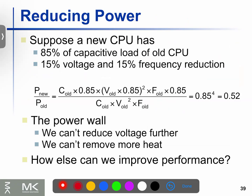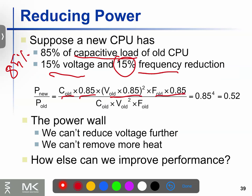The old CPU load is 85% of the capacity load. The voltage reduction and frequency reduction is 15%, and the old CPU is at 85% of capacity load.